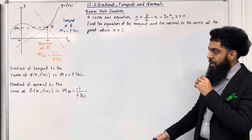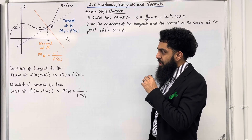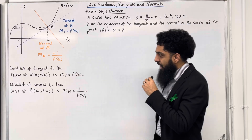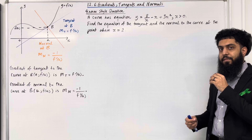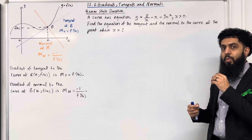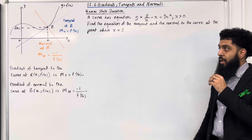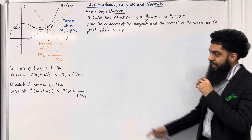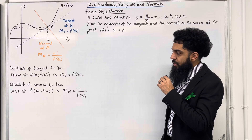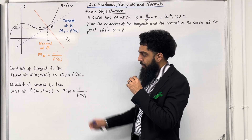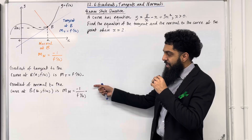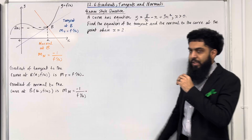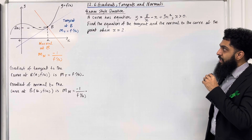There are two key facts. The first key fact: the gradient of the tangent to the curve at the point B is represented by m subscript t, and it is given by f'(a). So we work out the gradient function f'(x) and then substitute x equal a into the gradient function to find the gradient of the tangent to the curve at point B. Second key fact: the gradient of the normal to the curve at point B is represented by m subscript n, and it is given by the negative reciprocal of the gradient of the tangent.